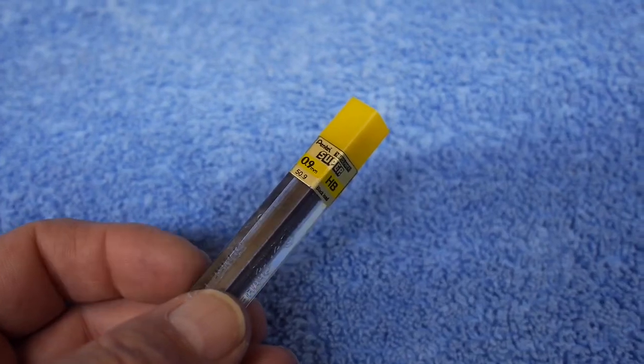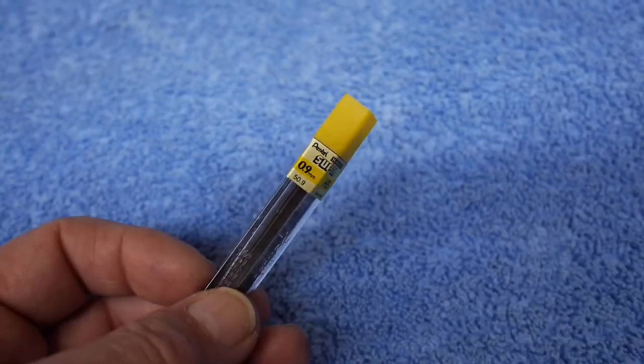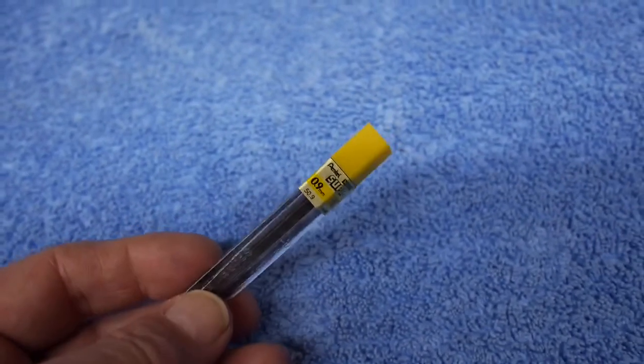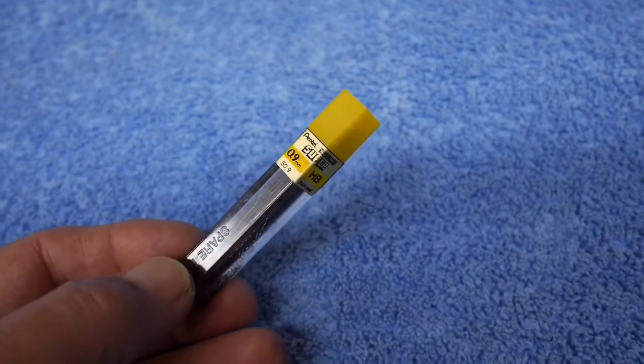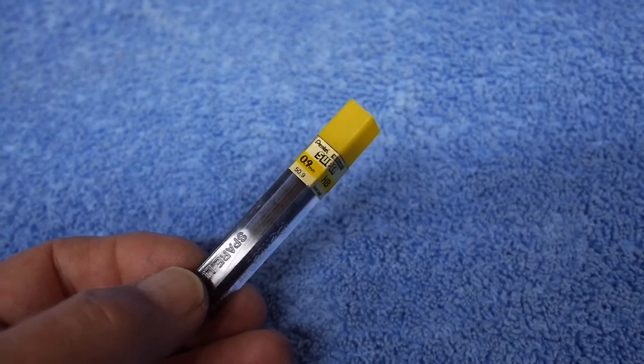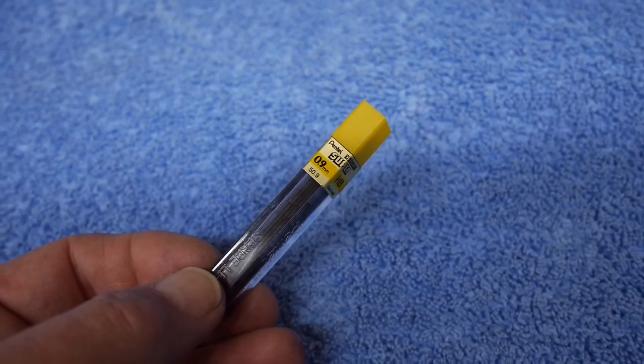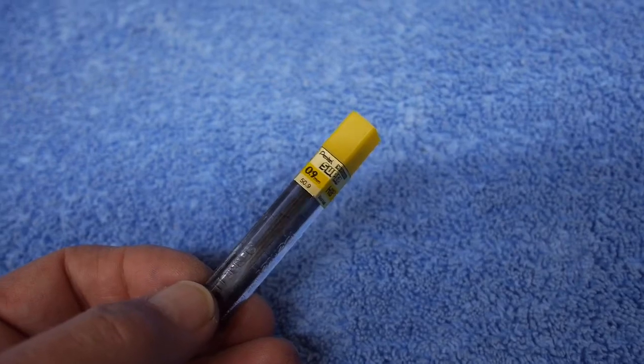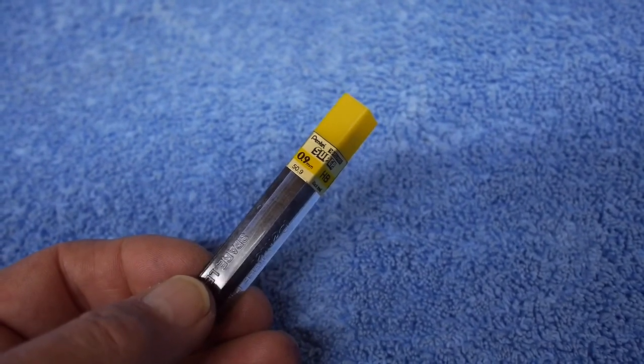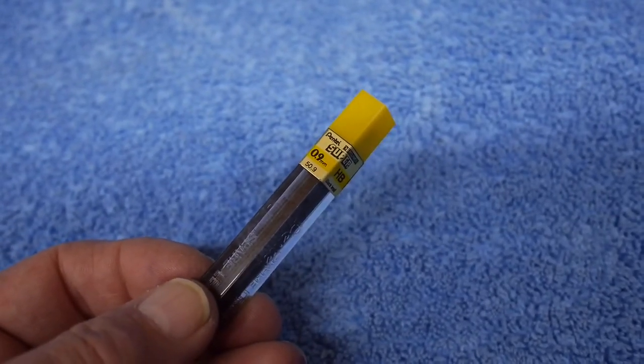Now, there also are 0.9 millimeter leads and mechanical pencils. I remember at one time I had one, it was a yellow Pentel. But I believe what I found was I didn't like the thickness of the lead. Yeah, it didn't break, but it was just a little too thick and it would get dull. You couldn't really sharpen them unless you want to use a piece of sandpaper or something. I just found them a little bit too thick for my purposes. But I do still have a pack of 0.9 millimeter leads.